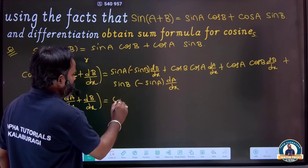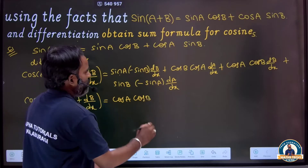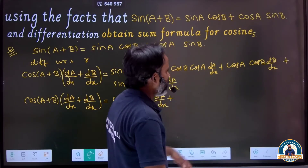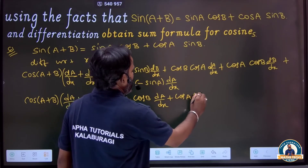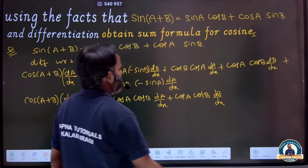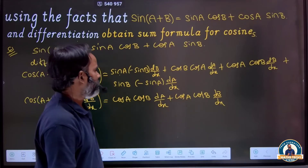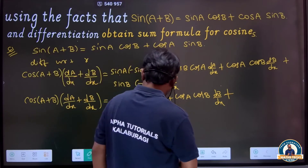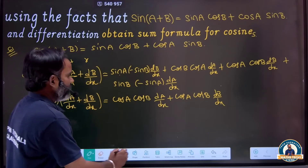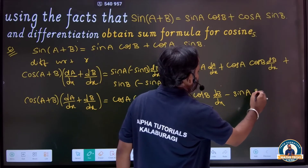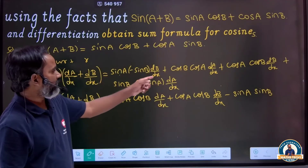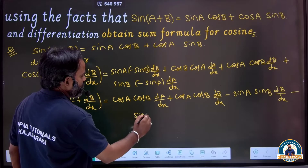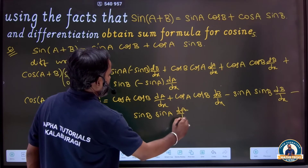Now collecting terms: we have cos a cos b times da/dx, and cos a cos b times db/dx. We can take out cos a cos b as a common factor. Then we also have minus sin a sin b times db/dx, and minus sin b sin a times da/dx.